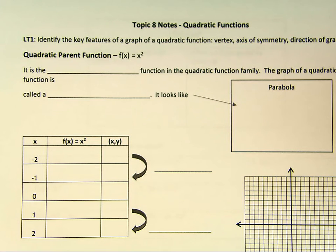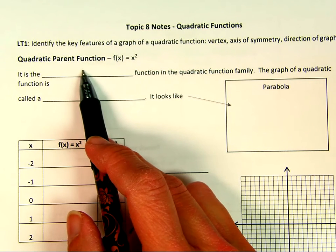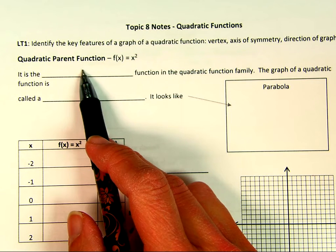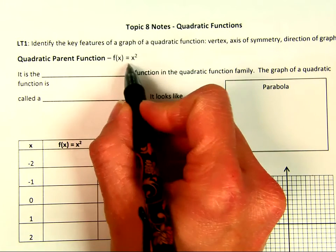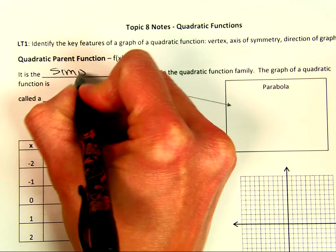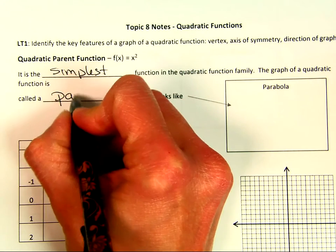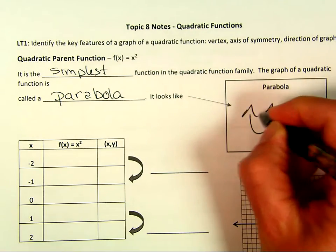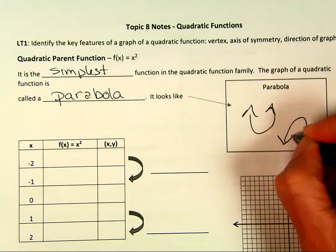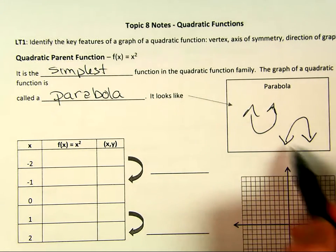First we want to start out with our quadratic parent function. A parent function is the most simplest form of a function — it doesn't move at all, not reflected, not compressed, not anything changed. It's the simplest graph in the quadratic function family. When we graph it, we call it a parabola. It can be skinnier, fatter, or shifted, but the basic shape is a U. It either opens up or it opens down.